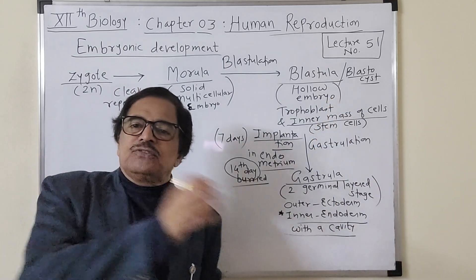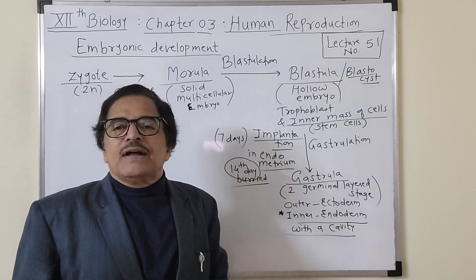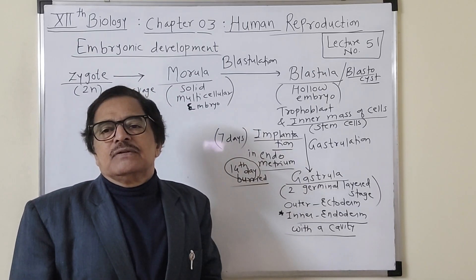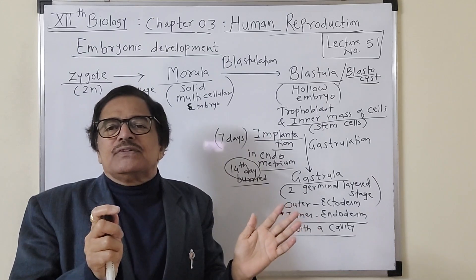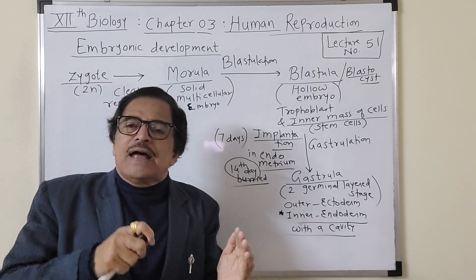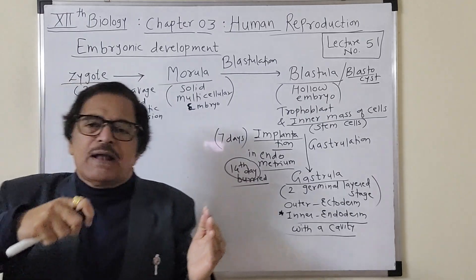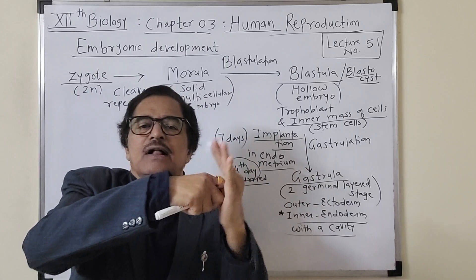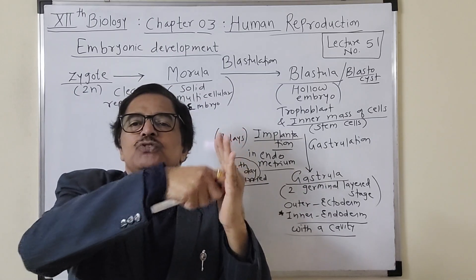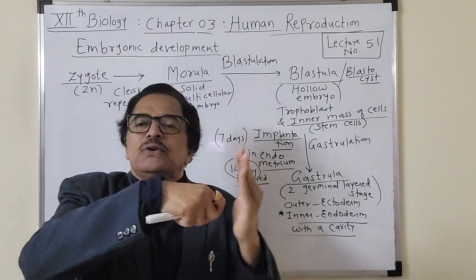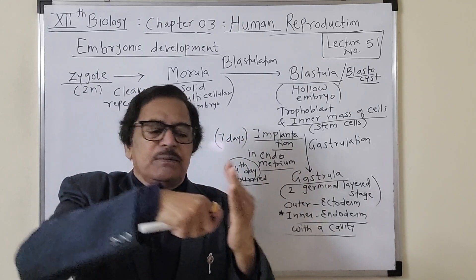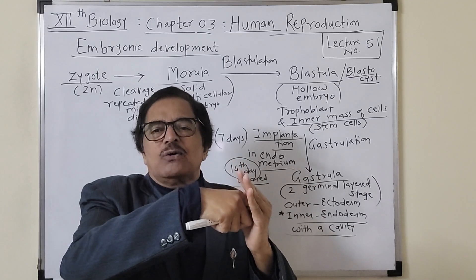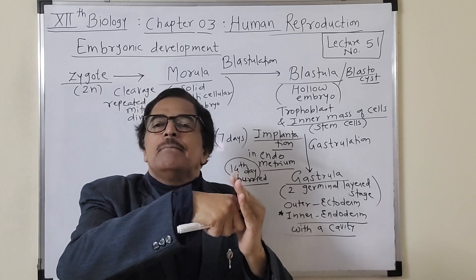Up to the blastocyst stage the embryo was free, but when the blastocyst has moved into the uterus, the outer trophoblast — the outermost covering — starts getting anchored into the endometrium, which is the cushion-like innermost wall of the uterus of the mother. This anchoring is called implantation.